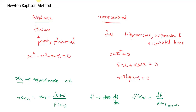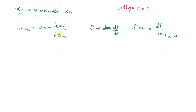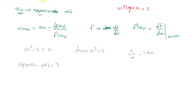We will apply Newton-Raphson to a function and differentiate it. For example, to find the square root of 2, we set f(x) = x² - 2. The actual root is 1.414. Suppose we take the approximate root x0 = 2 as our starting point.